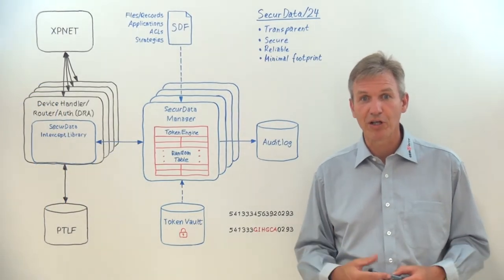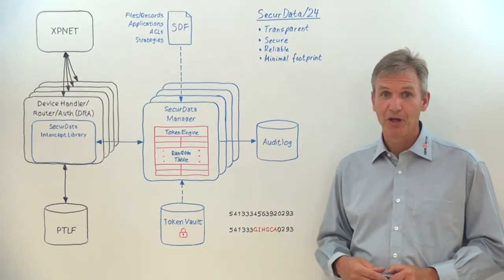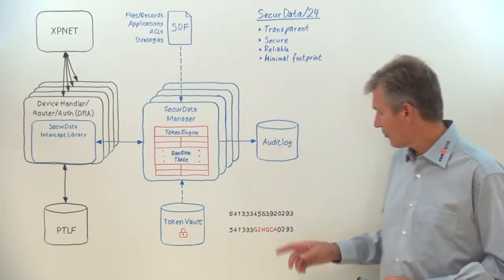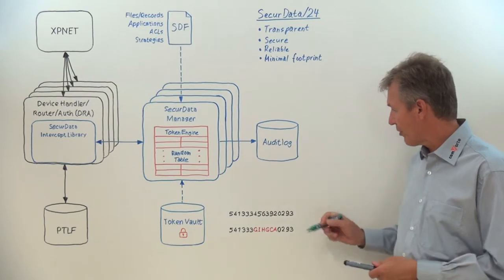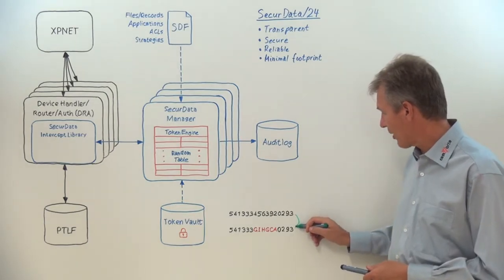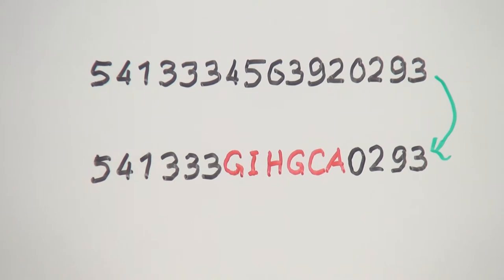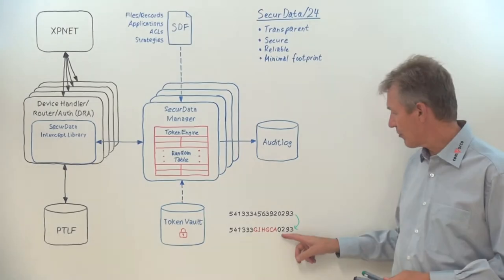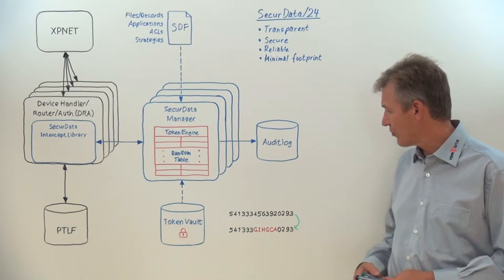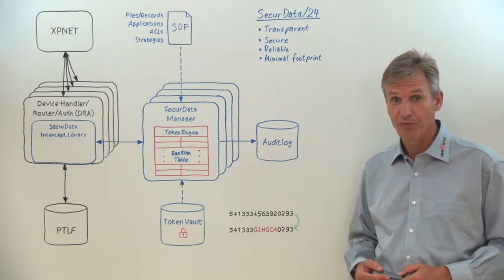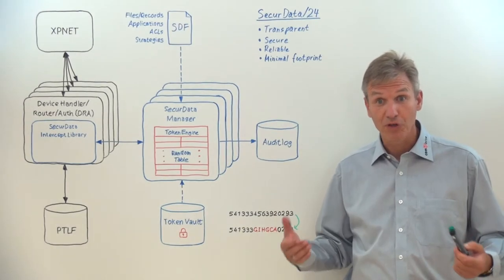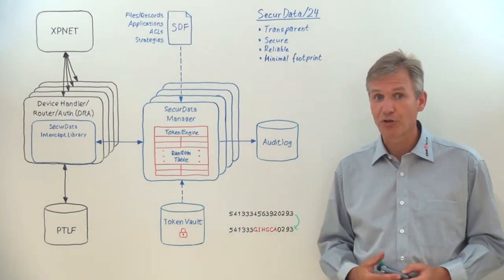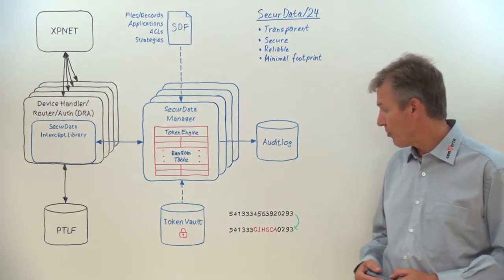To give you an example, look at this 16-digit PAN. A token is generated for that PAN that looks like this. As you can see, the leading six digits and the trailing four digits are preserved as PCI permits. The middle part had been replaced by a random string of characters. Note that this is only an example. The middle part could also be a random numeric replacement.